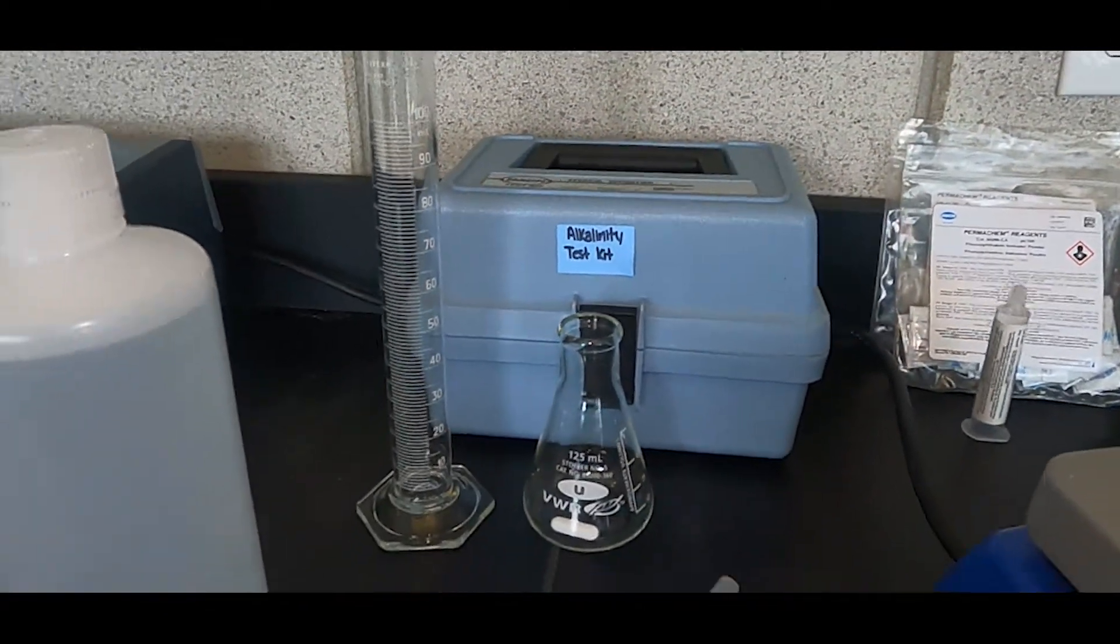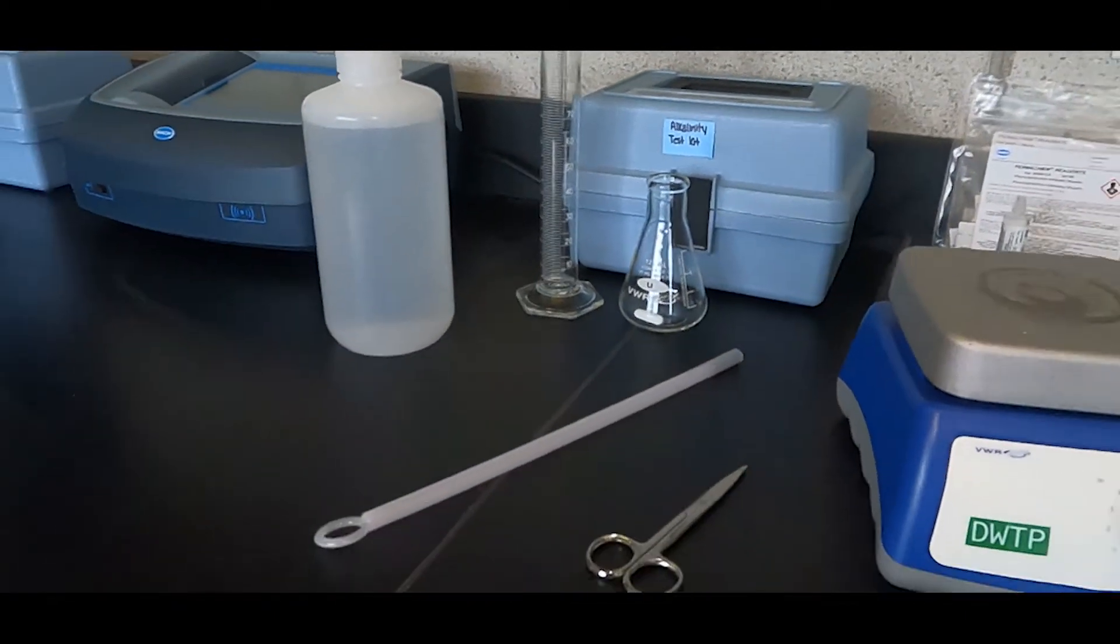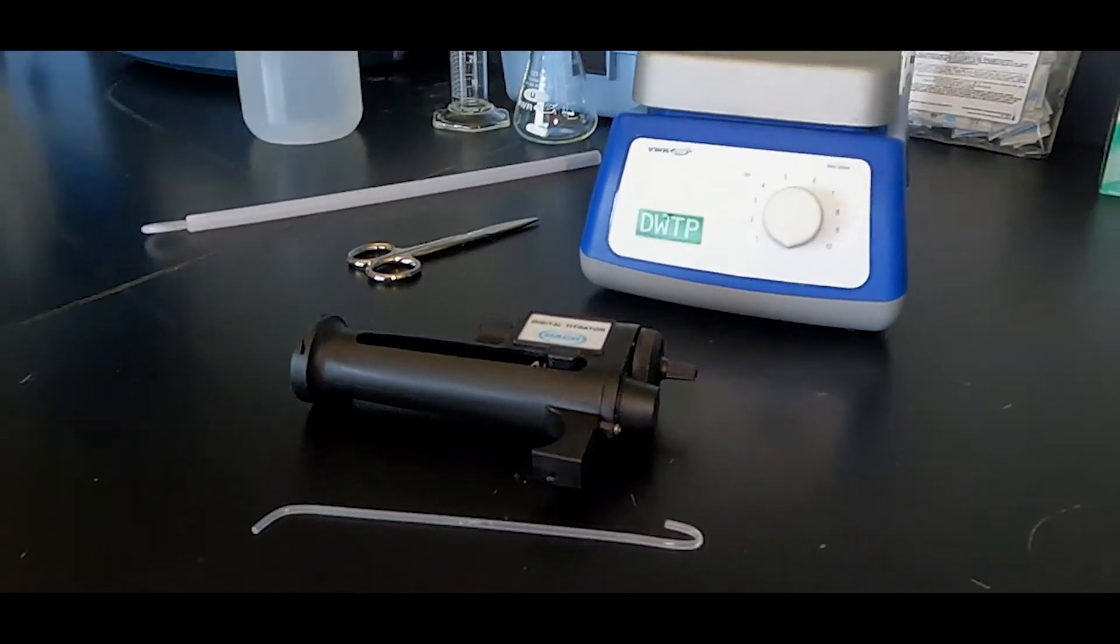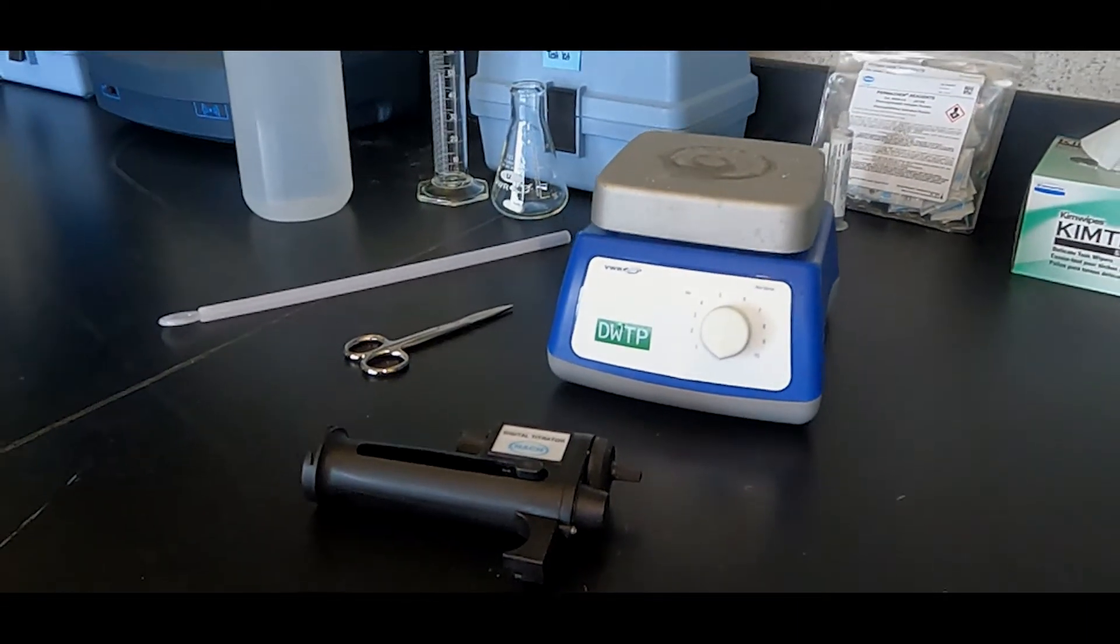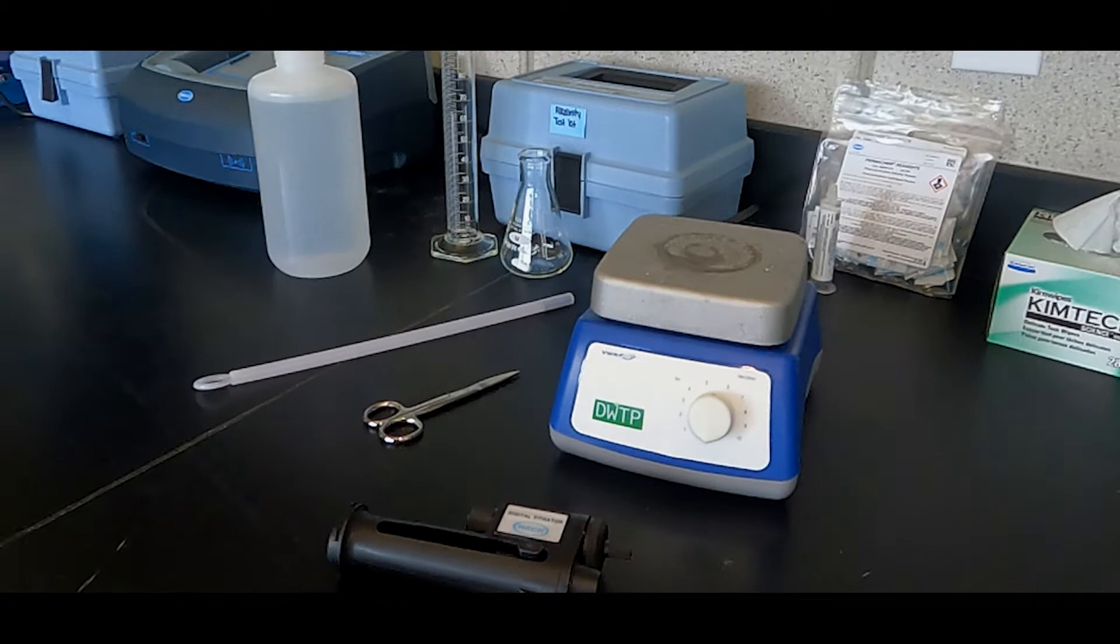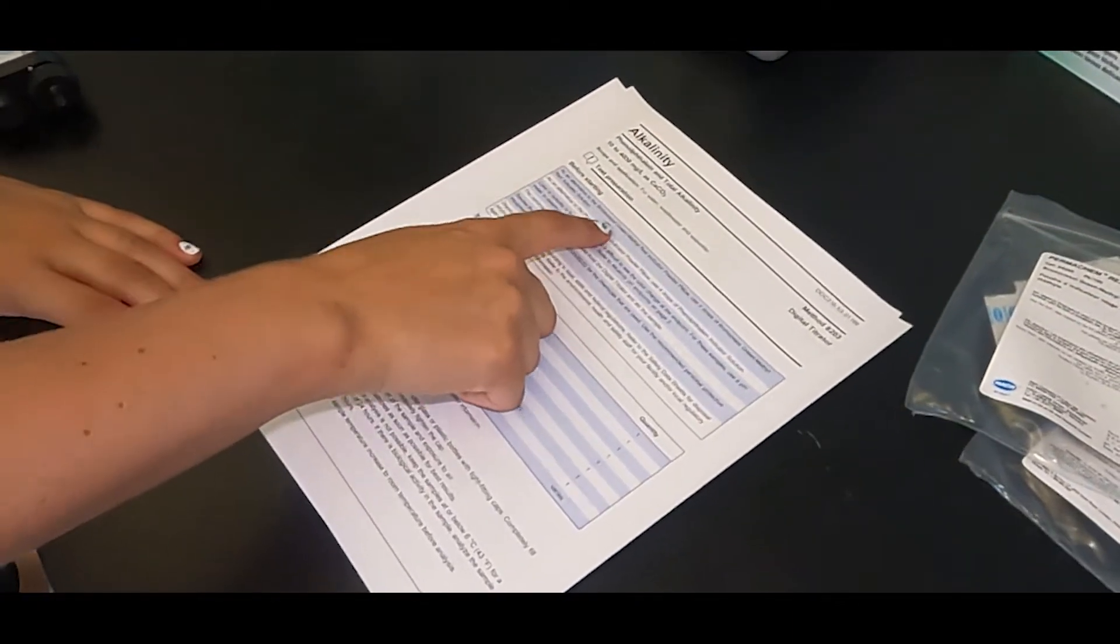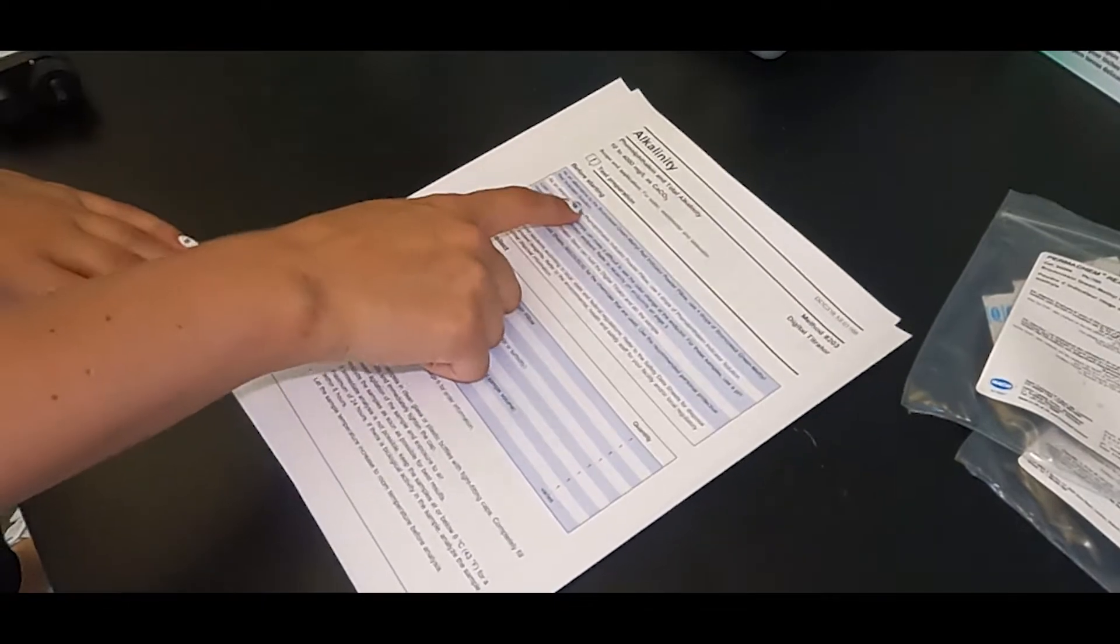Total alkalinity is a measure of all carbonate, bicarbonate, and hydroxide in the sample. This video will demonstrate how to properly analyze the phenolphthalein and total alkalinity of a water sample using a digital titrator following HAWC method 8203.